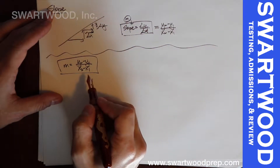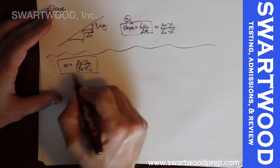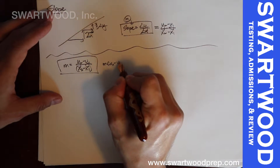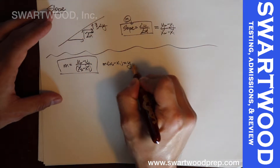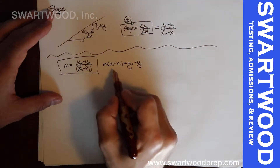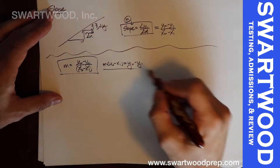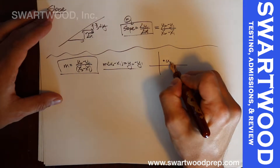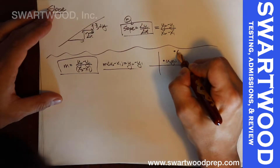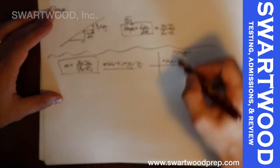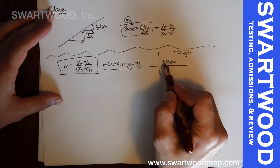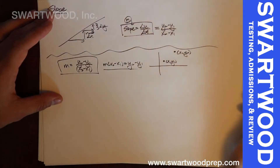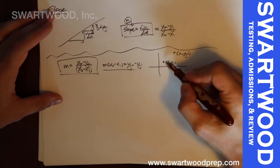Fractions scare me, so I'm going to multiply to get rid of that fraction. If you multiply both sides by (x2 minus x1), that would get rid of it, giving you m(x2 minus x1) equals y2 minus y1. Pictorially, you've got some graph with one point at (x1, y1) and another at (x2, y2), and we're looking at how much you go over and how much you go up.